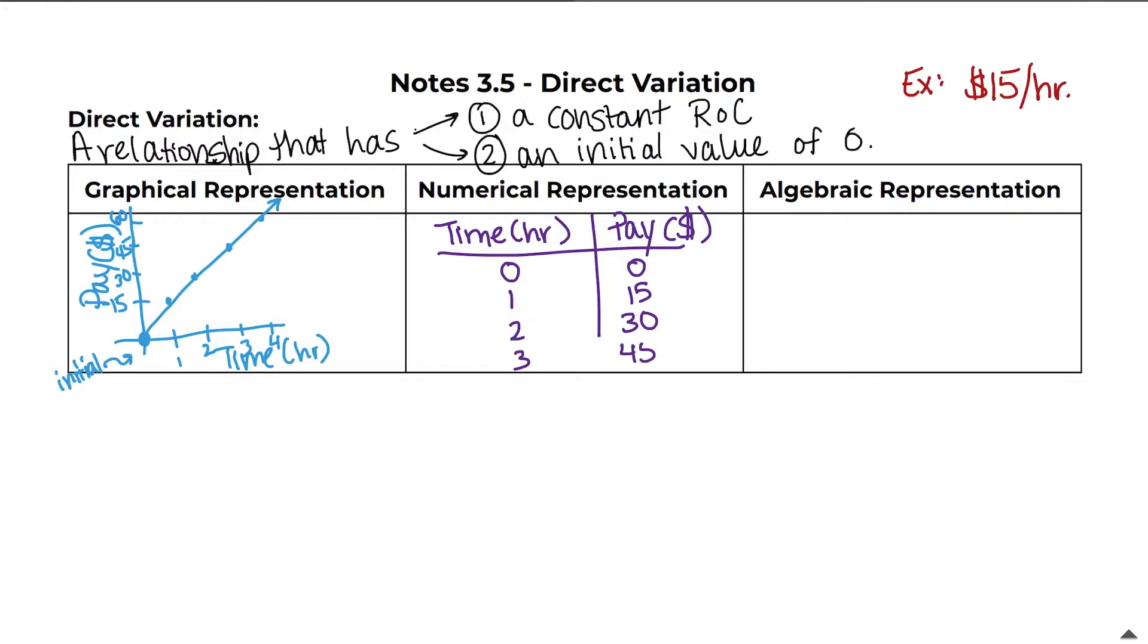Three hours, $45, so on and so forth. So this is a numerical representation because you have numbers or coordinates to represent what's happening in this situation. And then lastly is an algebraic equation, which is represented by an equation. So pretty much all that's happening here is that your pay is equal to $15 for every hour, starting at $0 for zero hours.